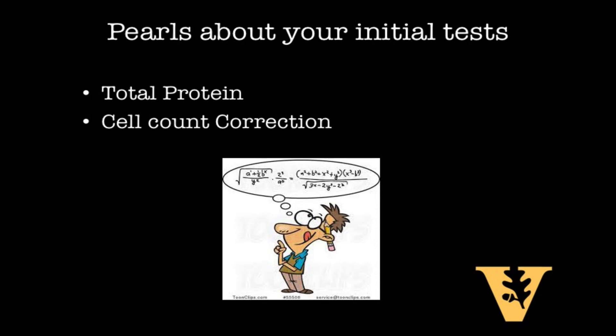Switching gears now to our cell count. Having some red cells in our ascitic fluid is not abnormal, but we have to keep in mind that there might be a falsely elevated number of white blood cells in our sample simply from systemic bleeding. That's why we will correct our white blood cell count by subtracting one white blood cell for every 750 red blood cells that we see in our ascitic fluid.